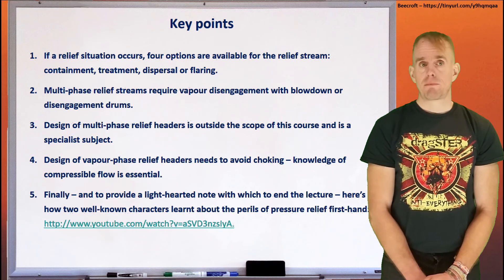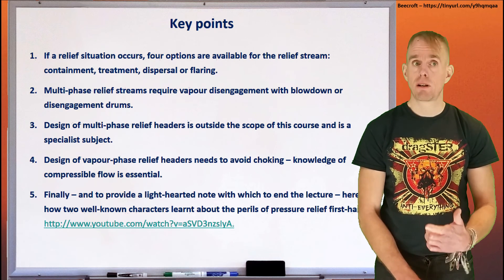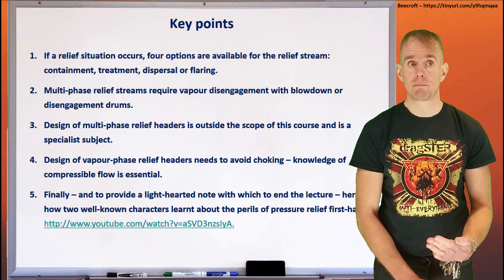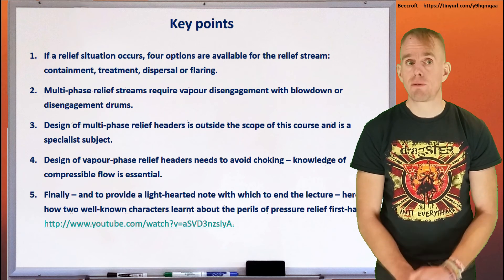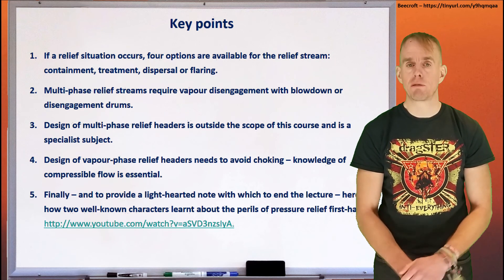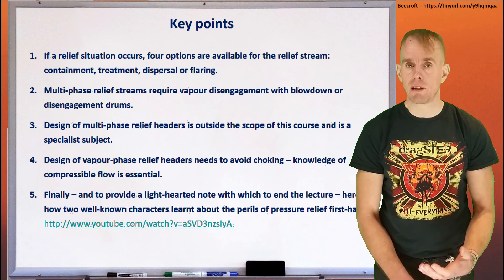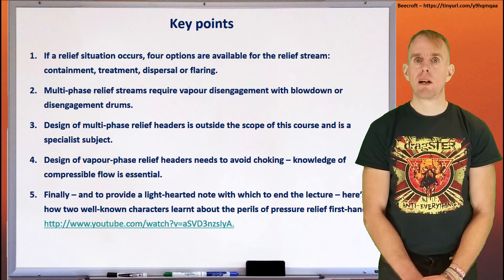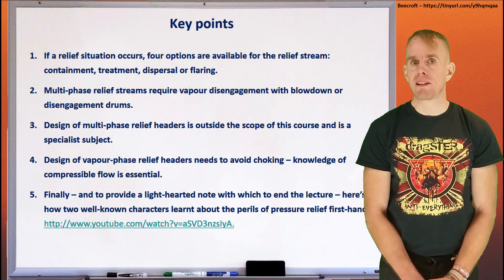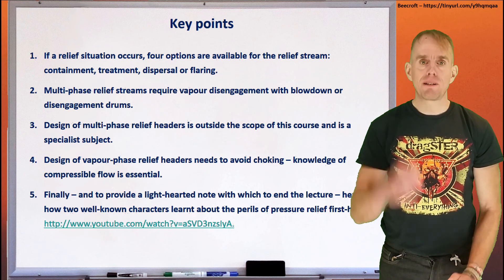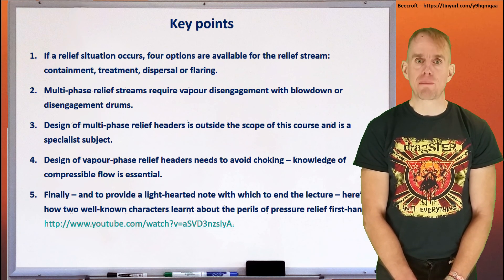Let's recap a few key points. If a relief situation occurs, four options are available for the relief stream: containment, treatment, dispersal, or flaring. Multi-phase relief streams require vapor disengagement with blow-down or disengagement drums. Design of multi-phase relief headers is way beyond the scope of this course and is a very specialist subject. The design of vapor-phase relief headers needs to avoid choking, so knowledge of compressible flow is absolutely essential. I've given you a methodology to start to think about how that might be done. Finally, just to provide a bit of light-hearted relief at the end of this lecture — if you'll excuse the pun — here are two well-known comic characters exploring pressure relief firsthand and all of the perils that it contains.